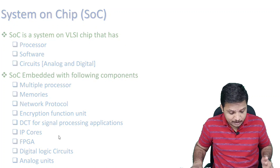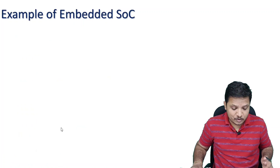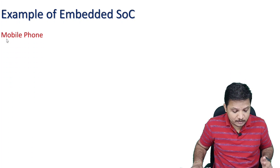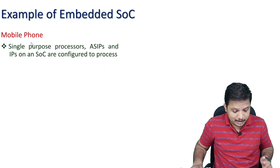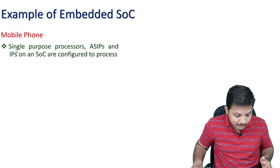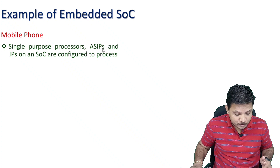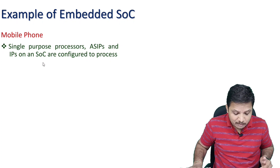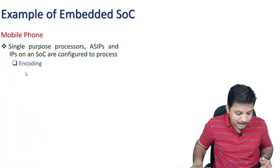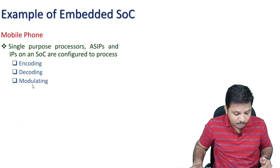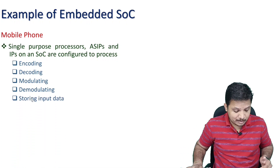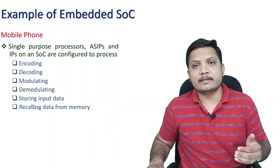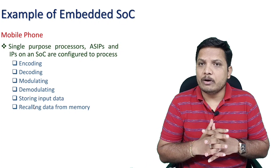System on chip can have analog and digital circuits. To illustrate this, consider the example of a mobile phone. A mobile phone has single-purpose processors and application-specific processors, as well as IPs on an SoC, used to configure many processes such as encoding, decoding, modulation, demodulation, storing data, and recalling data from memory.